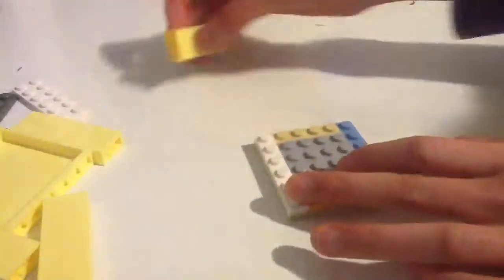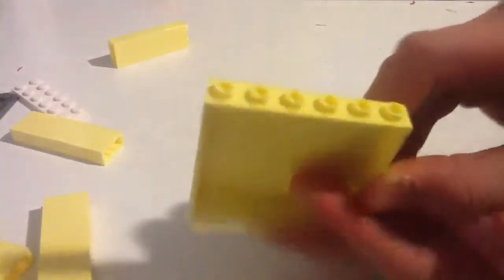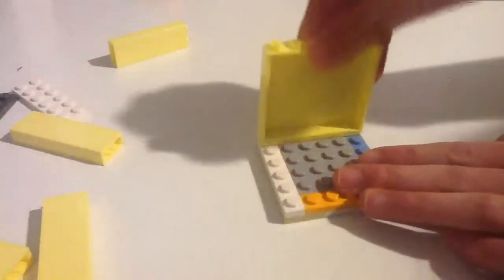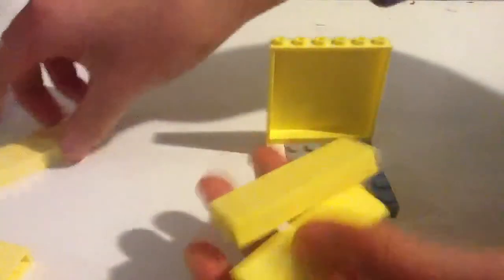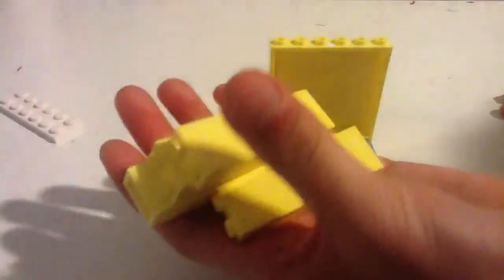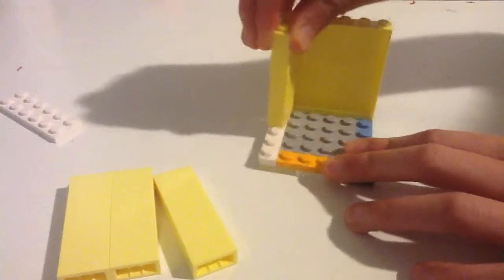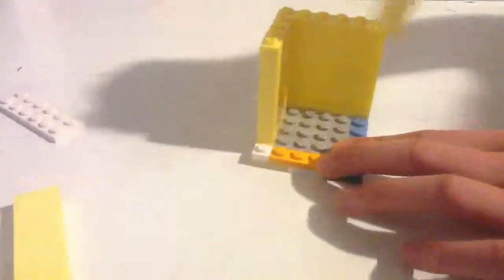Then grab the 1x6, 3 bricks high wall element, and grab 4 of these 3 bricks high, 1x2 wall element bricks, and put them on the sides like this.